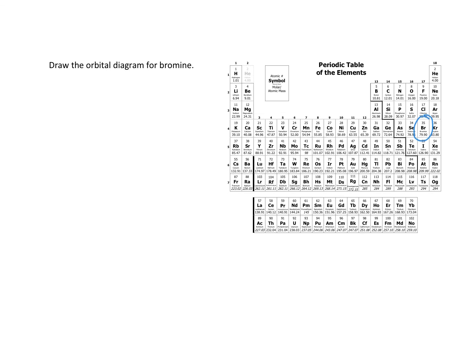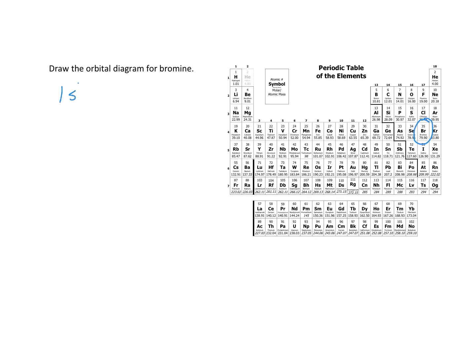Bromine is 1s2, 2s2, 2p6, 3s2, 3p6, 4s2, 3d10, and 4p5. It helps to write the electron configuration first.